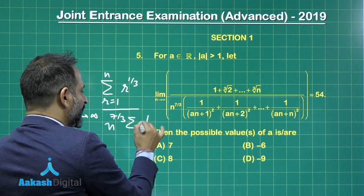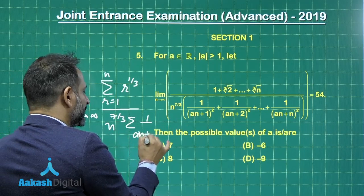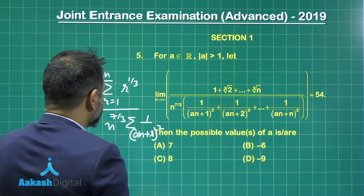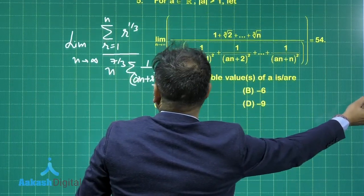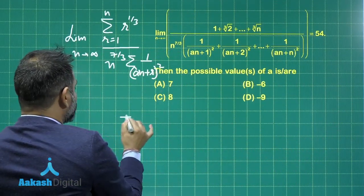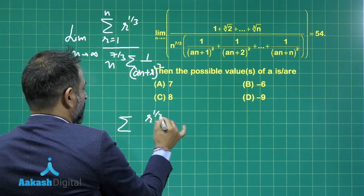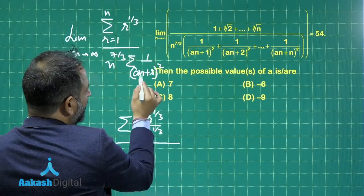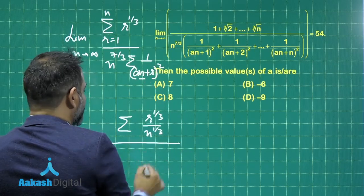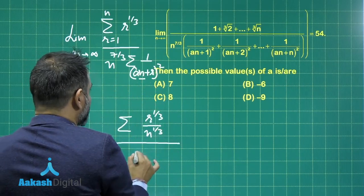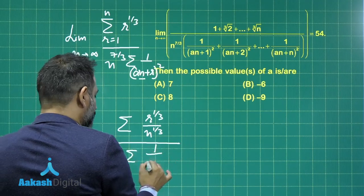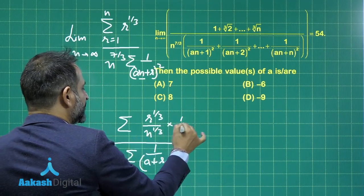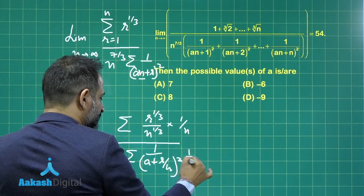This is sigma of 1 upon (a·n + r) whole square, where r is going from 1 to infinity. To convert this into a definite integral, we manipulate the terms: divide by n raised to the power 1/3 and take common n from the denominator. We will get n squared, and we will be left with 1 upon (a + r/n) whole square. Managing the terms well, we are left with 1/n in both parts.